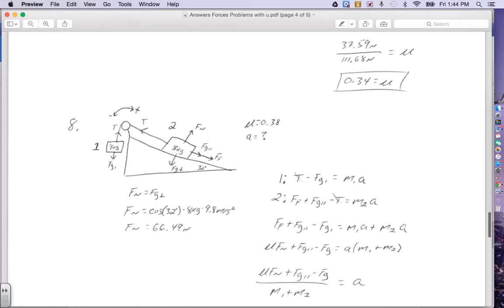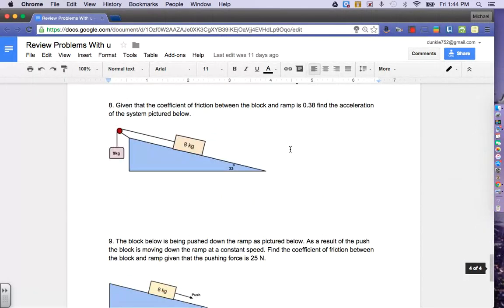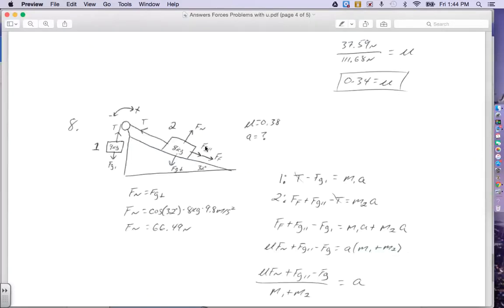Now we'll take a look at number eight, another multi-block problem. So we have the coefficient of friction between this block and the ramp at 0.38, and we're going to find the acceleration of this system. As always, we need all of our forces correct. On the hanging block, tension goes up, gravity goes down. The block on the hill, tension goes to the left, force of gravity parallel goes right, force of friction goes right, normal goes up, and gravity perpendicular goes down. The angle is given at 32 degrees. Now I numbered this block number one, and I number this block number two, so that when we're doing our equations, you know which equation is going for which block.